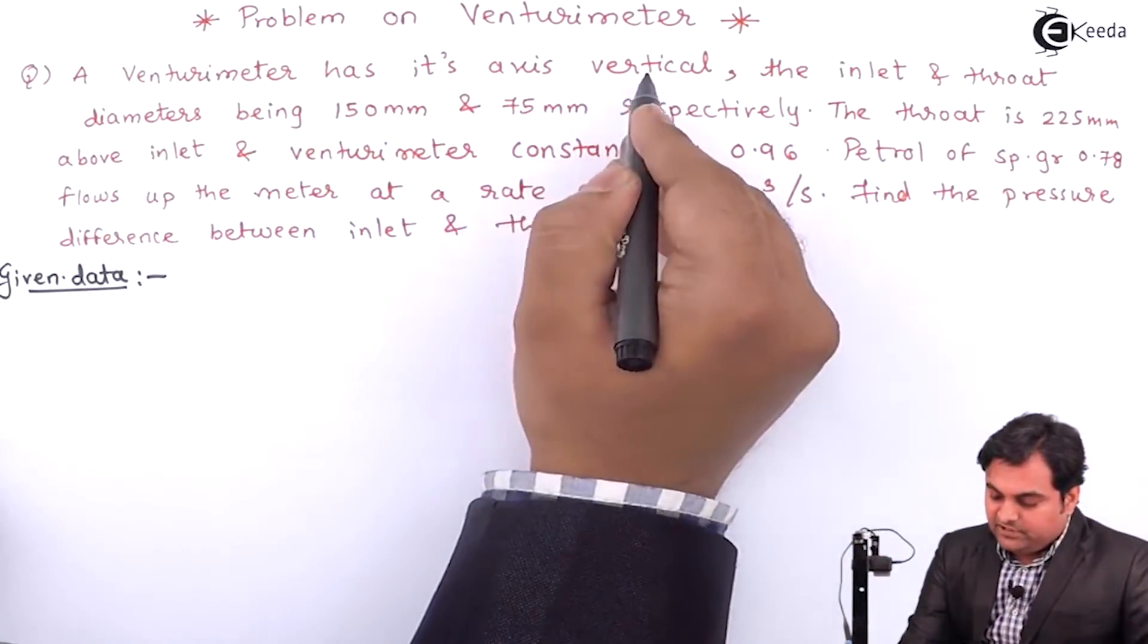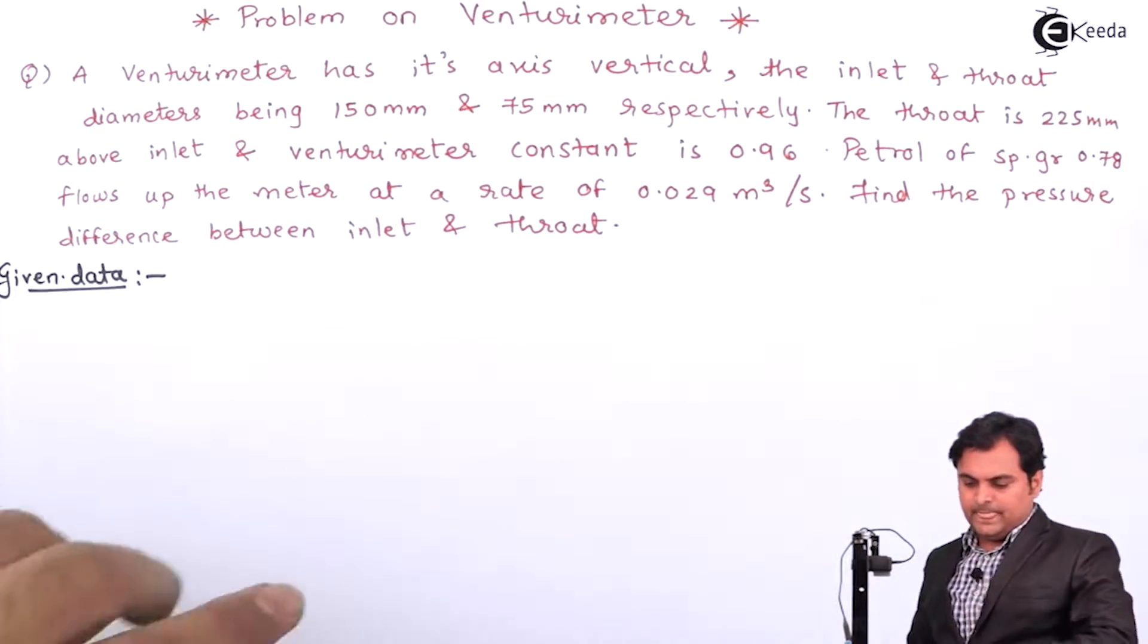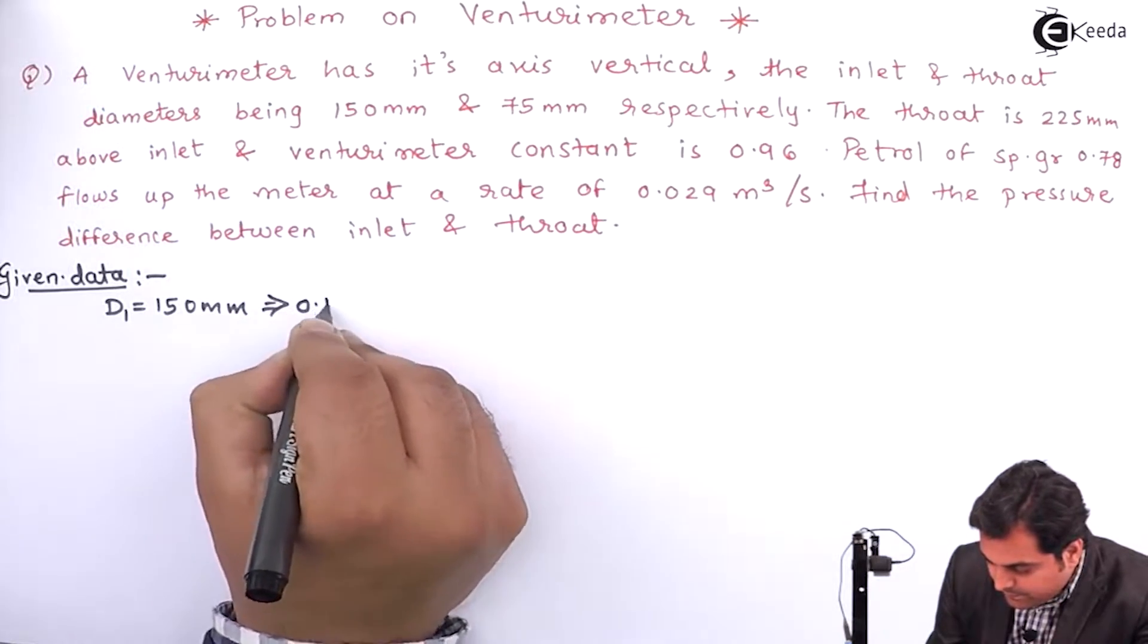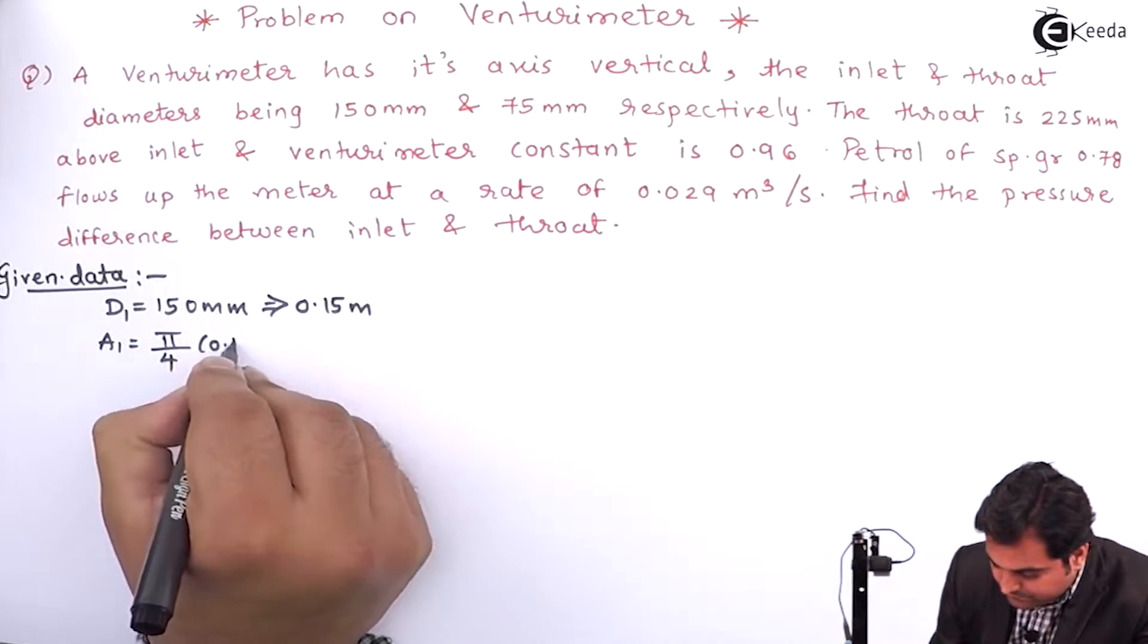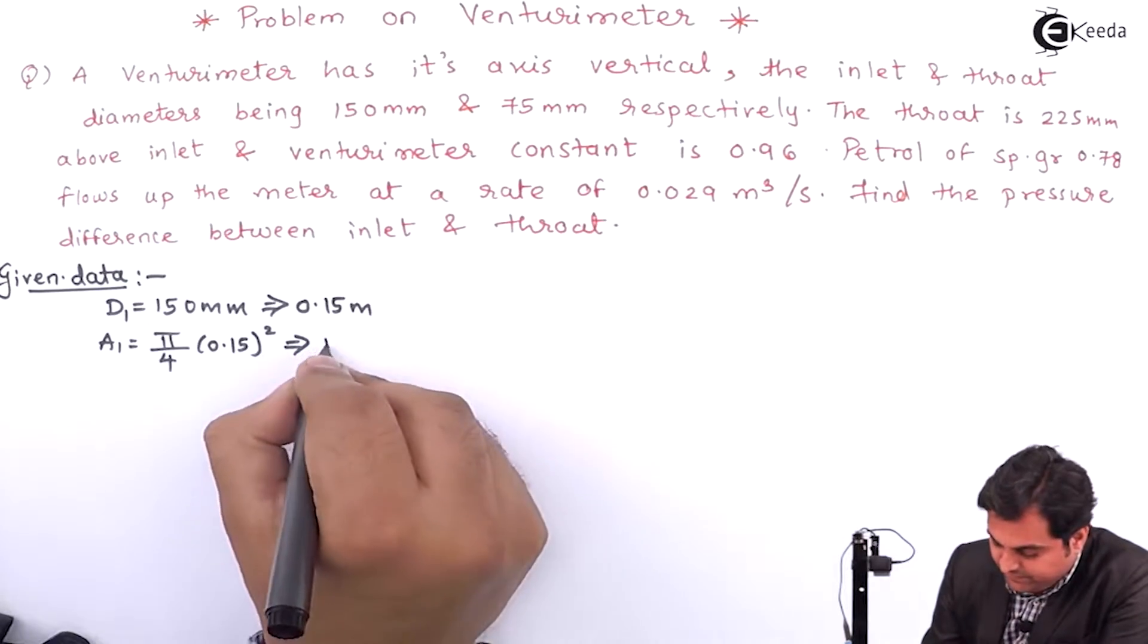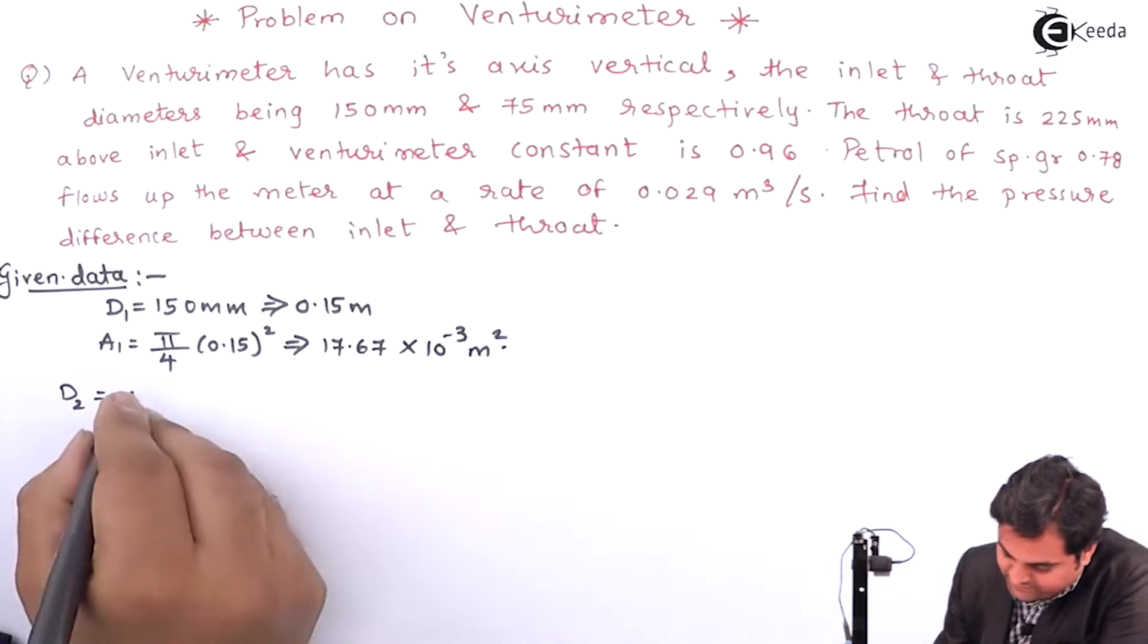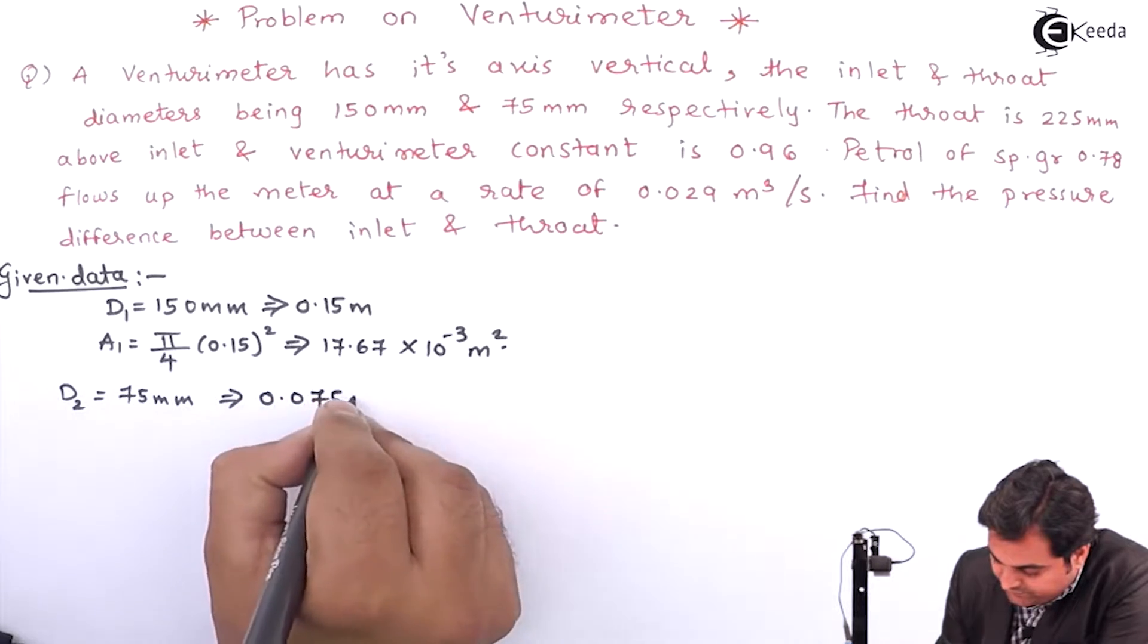The venturimeter is having vertical axis, it means it is a vertical pipe inside which the venturimeter is connected. Inlet diameter D1 is 150mm, area A1 is 17.67×10⁻³ meter square. Then diameter at section 2 is 75mm, 0.075 meters.